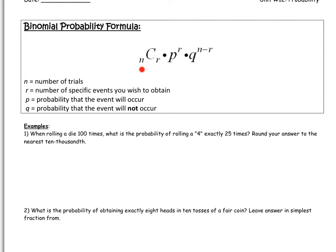N here is the number of trials, or the total that you were starting with. R is the number of events that you wish to obtain out of the total. P is the probability that the event will occur. But I want you to put in parentheses one trial here.